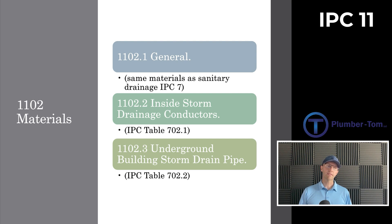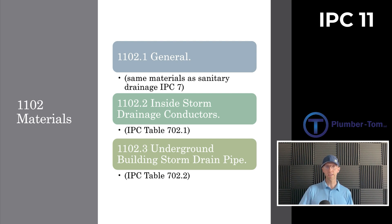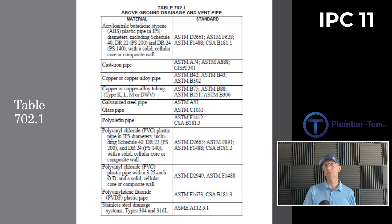In 1102, we get specifics about the materials used for storm drains. 1102.1 says in general it's going to be the same materials as the sanitary drainage system from Chapter 7. 1102.2 says inside storm drainage conductors are listed on Table 702.1, and underground building storm drain pipe is listed on Table 702.2. Table 702.1 includes a variety of materials: ABS, cast iron, copper, PVC. The most common on storm drains are cast iron and PVC.